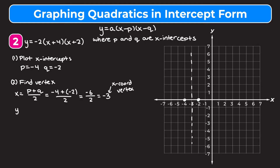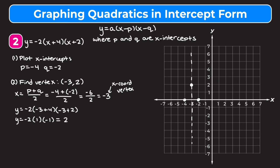To find the y-coordinate we plug negative three back into our equation for x. We have negative two times the quantity of negative three plus four times the quantity of negative three plus two. Negative three plus four is positive one, and negative three plus two is negative one. Negative two times one is negative two, times negative one is positive two. So our vertex is the point negative three, comma, two.